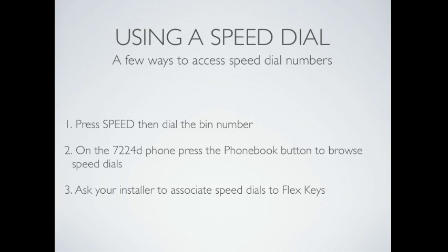There are a few ways to access speed dial numbers, and these are the same regardless of whether it's system or station speed dial. First, you can press the Speed button and then dial the bin number. If you have a 7224D, you can press the Phone Book button to browse your speed dials. You can also ask your installer to associate speed dials to your flex keys, which are the programmable buttons on the right-hand side of your phone.